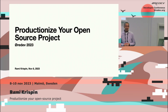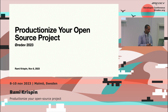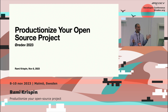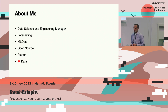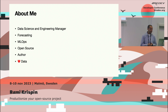My name is Rami Krispin and I'm going to talk today about the open source and auto-production open source project. Thank you for coming — I'm really excited to be here at my first conference outside of the US. I'm a data science and engineering manager at Apple, though I'm not representing Apple here today. I mainly focus on forecasting, time series forecasting, and MLOps, and I'm an open source contributor mainly to the R language.